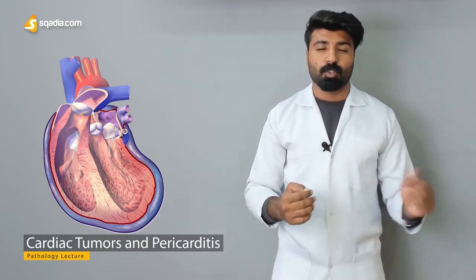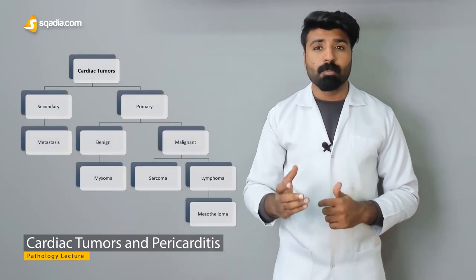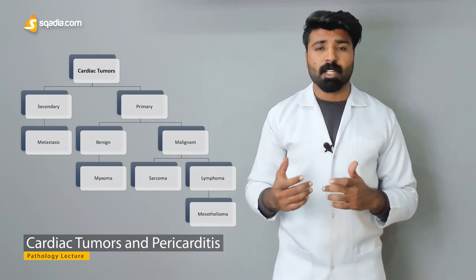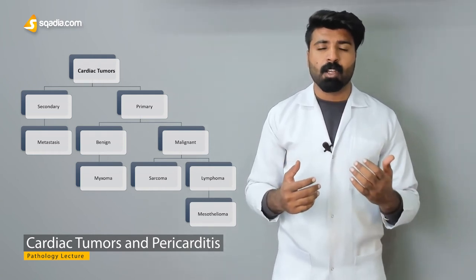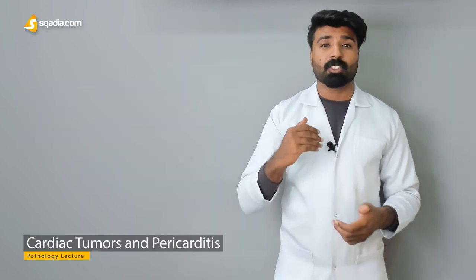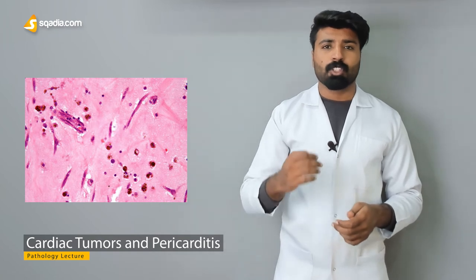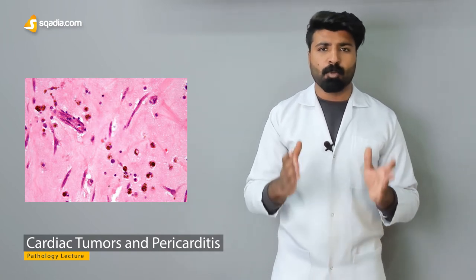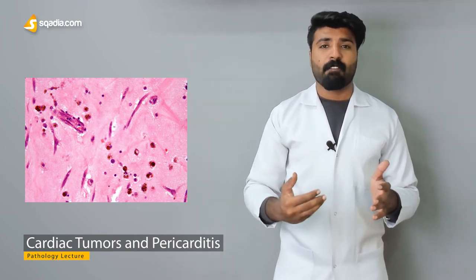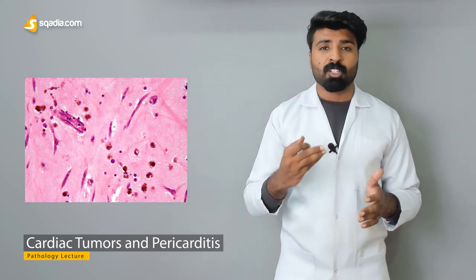First, we'll start with cardiac tumors — how they're classified, either as primary or secondary cardiac tumors. Then we'll go into depth starting with primary tumors: myxomas. We'll cover what genetic mutations may lead to myxoma, what myxomas are, where they're located inside the heart, and what the pathological consequences of myxomas are.